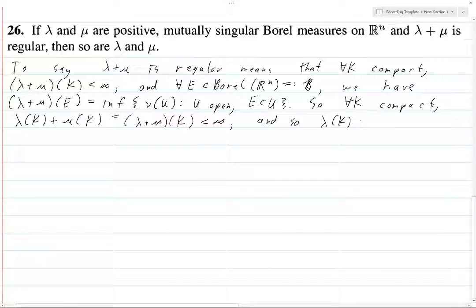And so λ(k) and μ(k) must both be finite, and this follows from a very important theorem of analysis, which is that if you have two things that are positive and add up to something that's less than infinity, then those two things are less than infinity. It's a neat fact. So anyways, now for something that's a little bit not completely trivial.